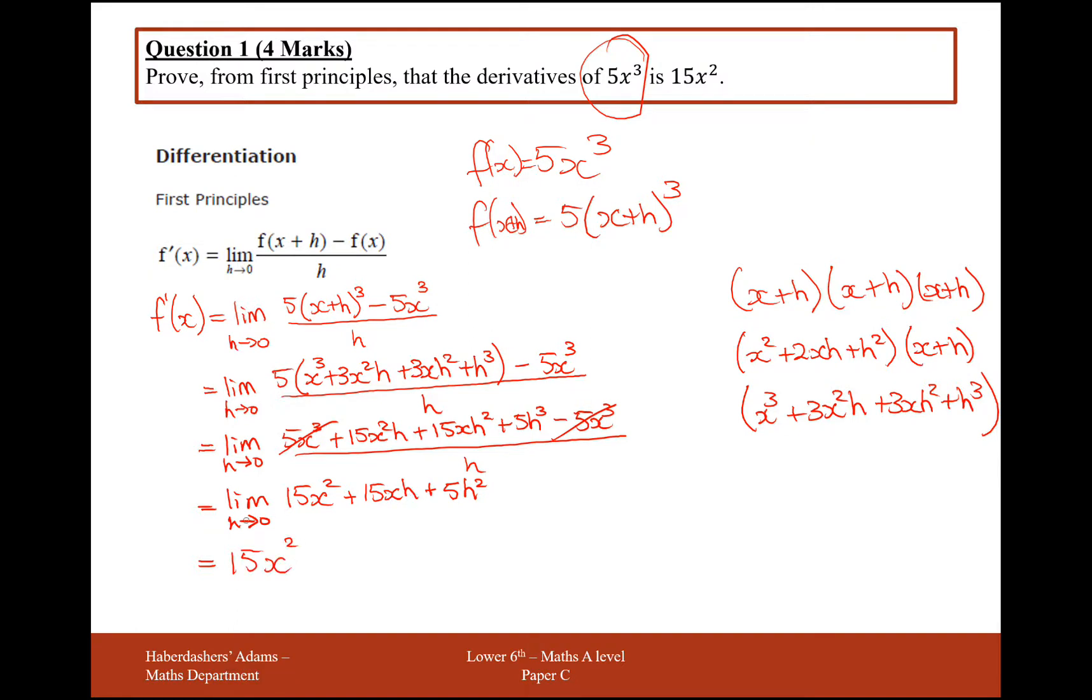As h tends towards 0, this expression here will get closer towards 0. No matter what value x is, as h tends towards 0, that will become 0. And 5h² as h tends towards 0, that will eliminate the h there as well.